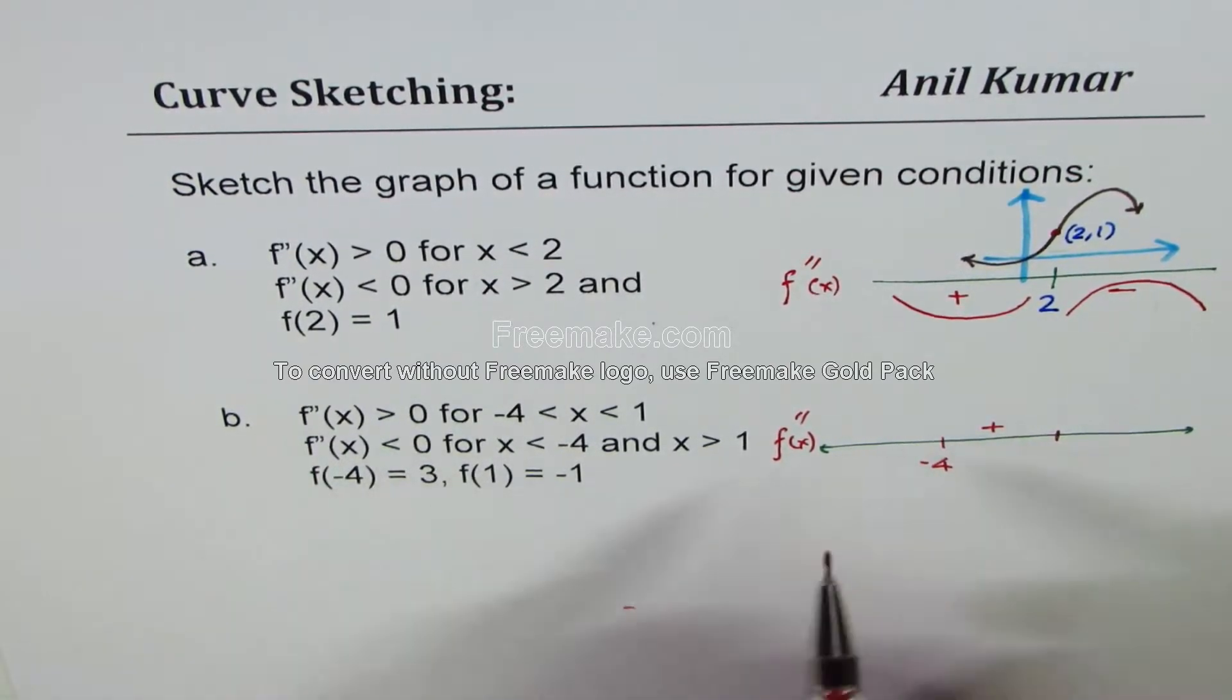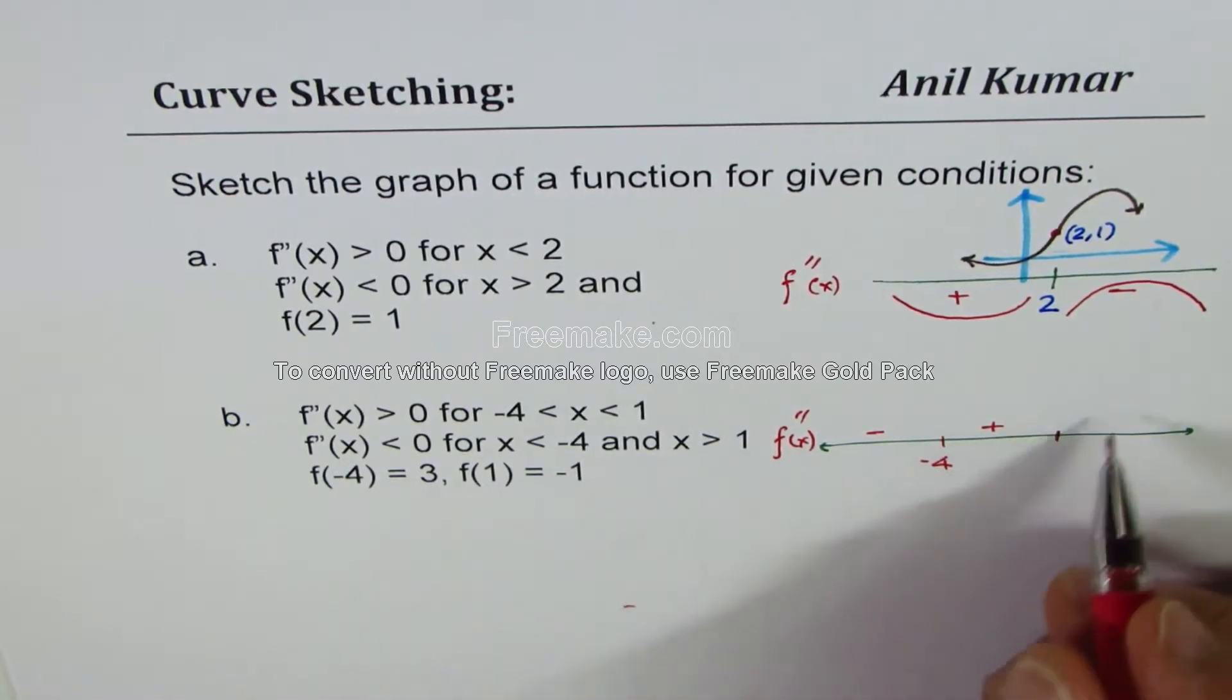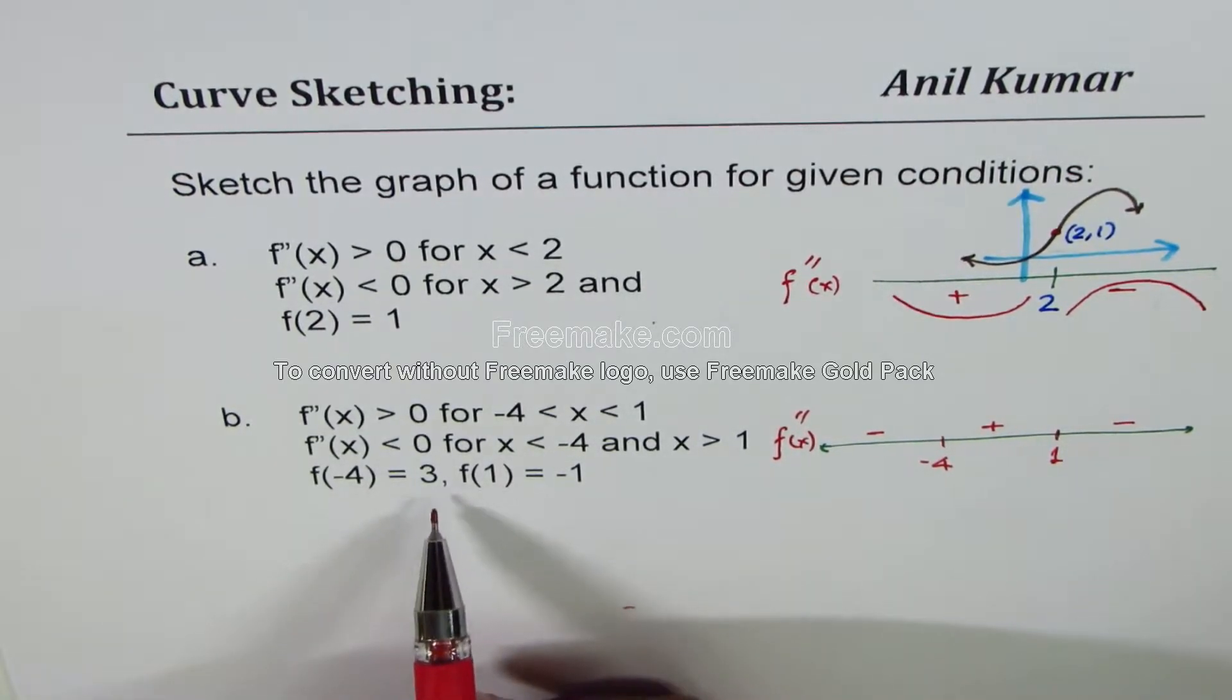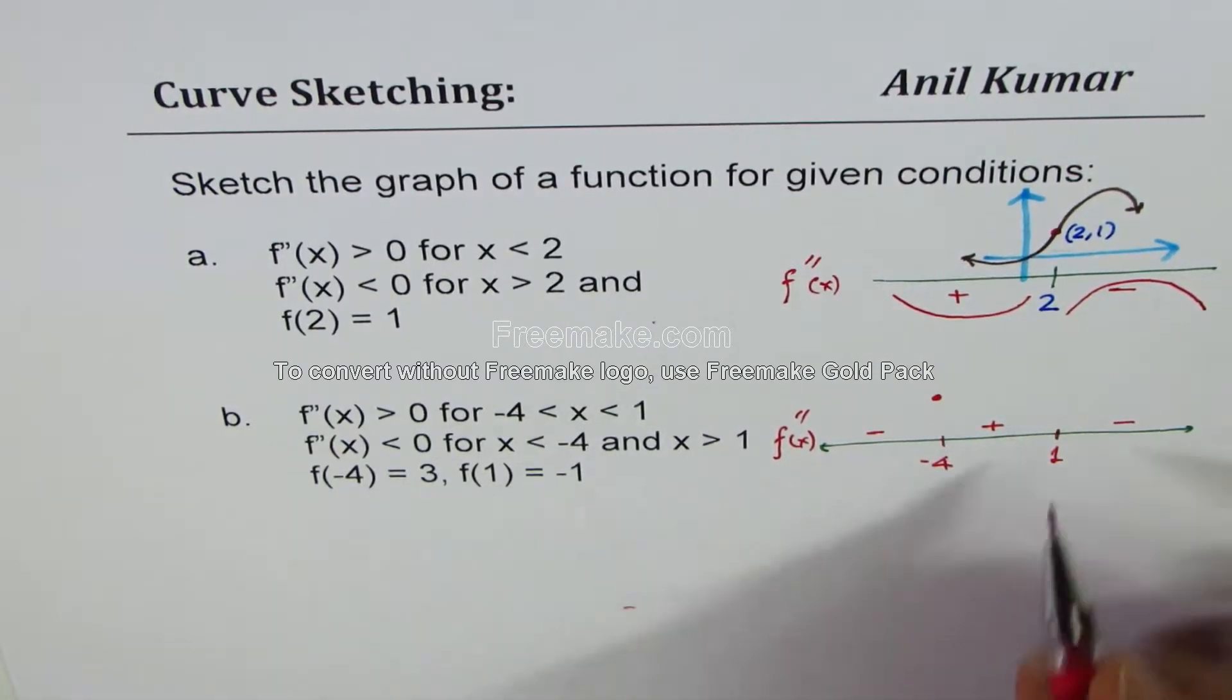Second derivative is less than 0 on this side. So that means negative here. And beyond 1, it is negative. We are also given that the value of the function at -4 is 3. Let's say this is 3. And at 1, it is -1.